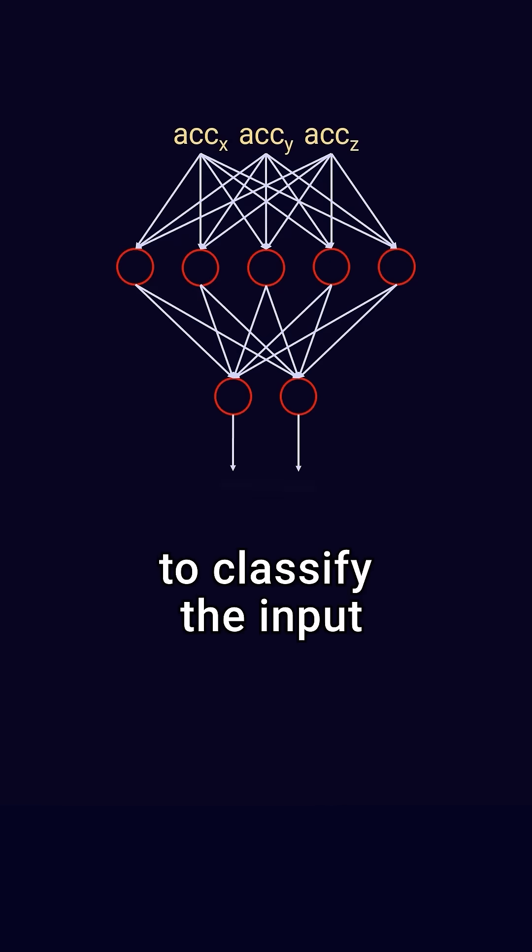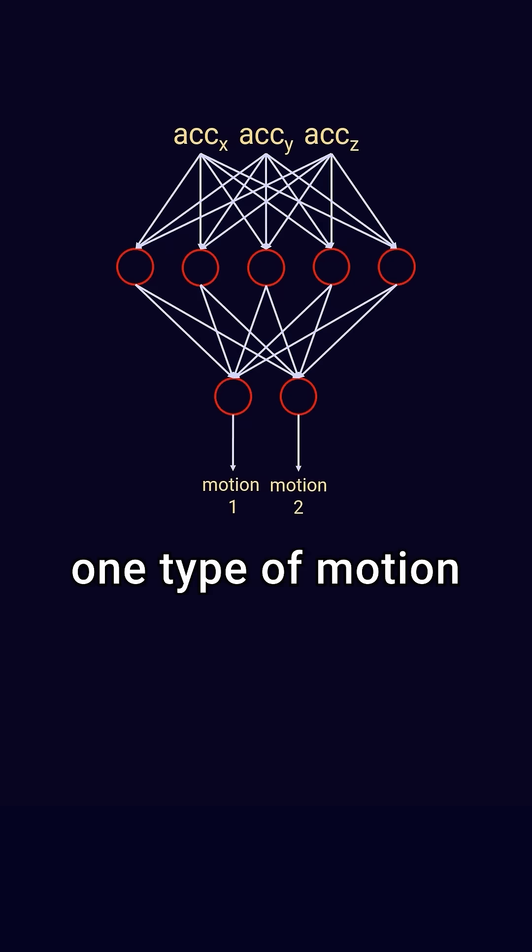The outputs of the final layer can be used to classify the input data or make predictions, such as if an accelerometer is making one type of motion versus another.